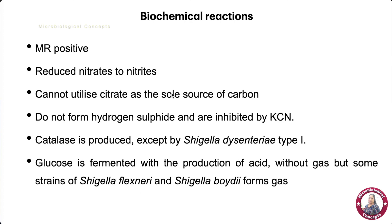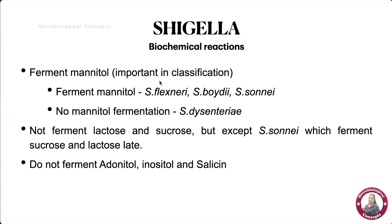In biochemical reactions, Shigella is methyl red positive and can reduce nitrates to nitrites. In citrate utilization test it cannot utilize citrate as the sole carbon source. It does not produce hydrogen sulfide and is inhibited by potassium cyanide. It produces catalase — except Shigella dysenteriae type 1, which cannot. It ferments glucose with acid but no gas, except Shigella flexneri and Shigella boydii, which produce acid and gas.